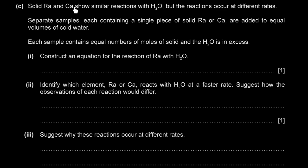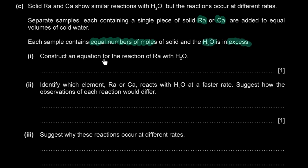The solubility of group 2 hydroxides increases down the group. Magnesium hydroxide is insoluble, calcium hydroxide is partially soluble, and strontium/barium are soluble. Since we're using excess water, we won't see a precipitate forming as the reaction takes place, though we might eventually see a precipitate of calcium hydroxide. The observable difference is that bubbles of hydrogen gas form faster with radium, and the solid radium dissolves faster than calcium.